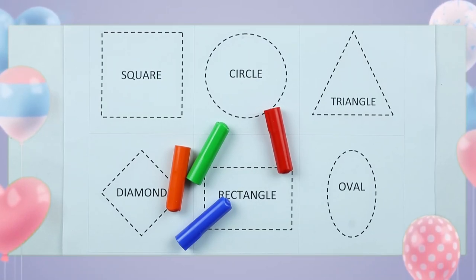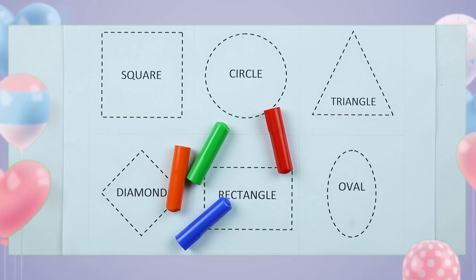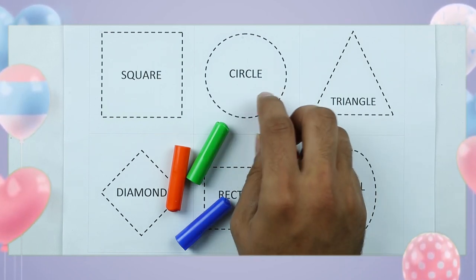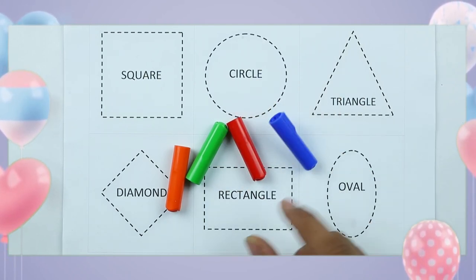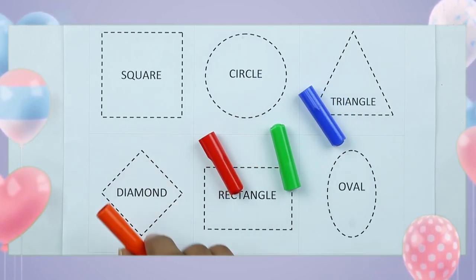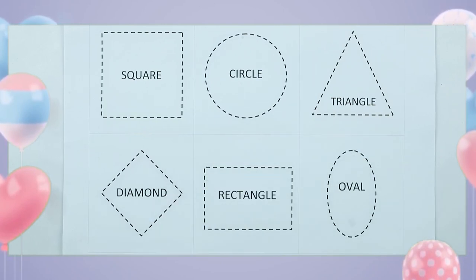Hello friends, today we learn shapes: square, circle, triangle, diamond, rectangle, oval with colors: red color, blue color, orange color, green color. Let's start.